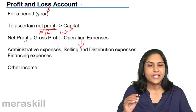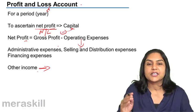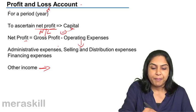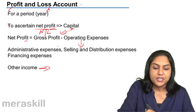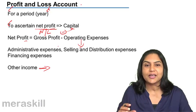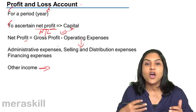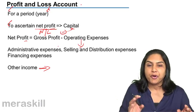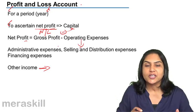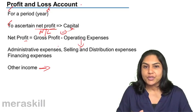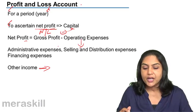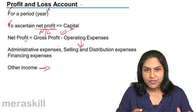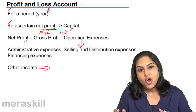Another item that may appear in the profit and loss account is other income, which is credited to the account. The profit and loss account is prepared for a period — a year — and its purpose is to ascertain the net profit or net loss, representing the net results of the operations of the business. Net profit is computed as: gross profit minus operating expenses, which include administrative expenses, selling and distribution expenses, and financing costs.